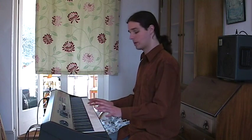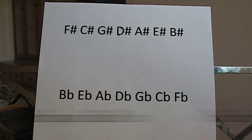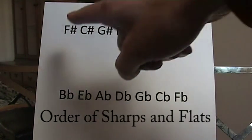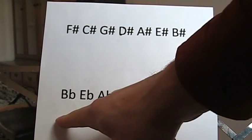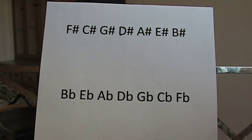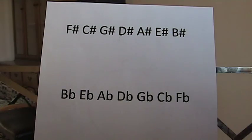We'll learn the circle of fifths, and that's going to show you how to learn all the key signatures and get them memorized really fast. So here's the order of sharps right there, and here's the order of flats. Write that down now so you've got it in front of you on a piece of paper.